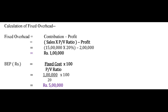After calculating the PV Ratio and Fixed Cost, we now calculate Break Even Point Sales. BEP Sales = Fixed Cost upon PV Ratio × 100. Fixed Cost is ₹1,00,000 and PV Ratio is 20%. Therefore, BEP Sales = ₹5,00,000 rupees.